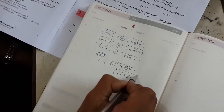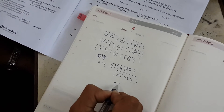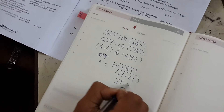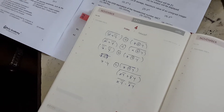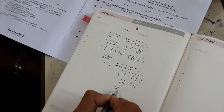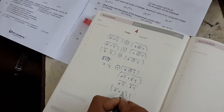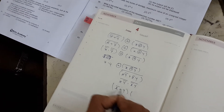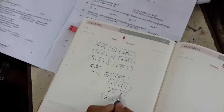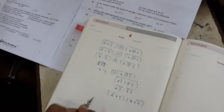And then the whole bar. If you solve this, this will be (X·Ȳ)̄ · (X̄·Y)̄. Again if you solve this, this will be X̄ + Y, again using De Morgan's law. And this sign will be dot, this will be X + Ȳ.